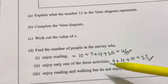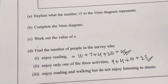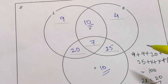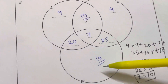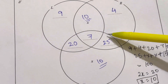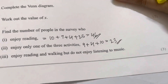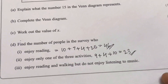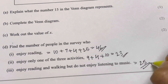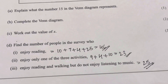The next part asks: how many enjoy reading and walking but do not enjoy listening to music? Looking at the Venn diagram, that region is 25. So 25 people enjoy reading and walking but not music.